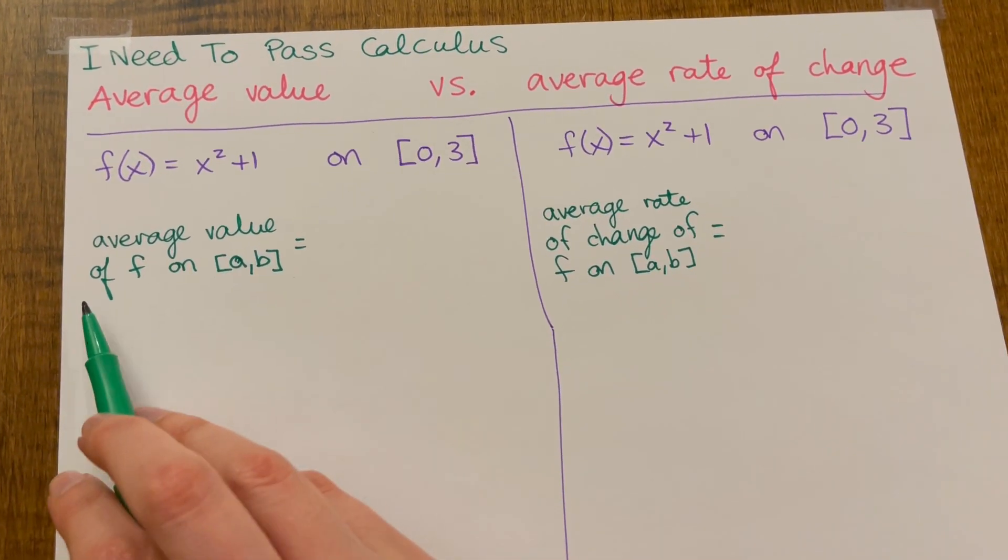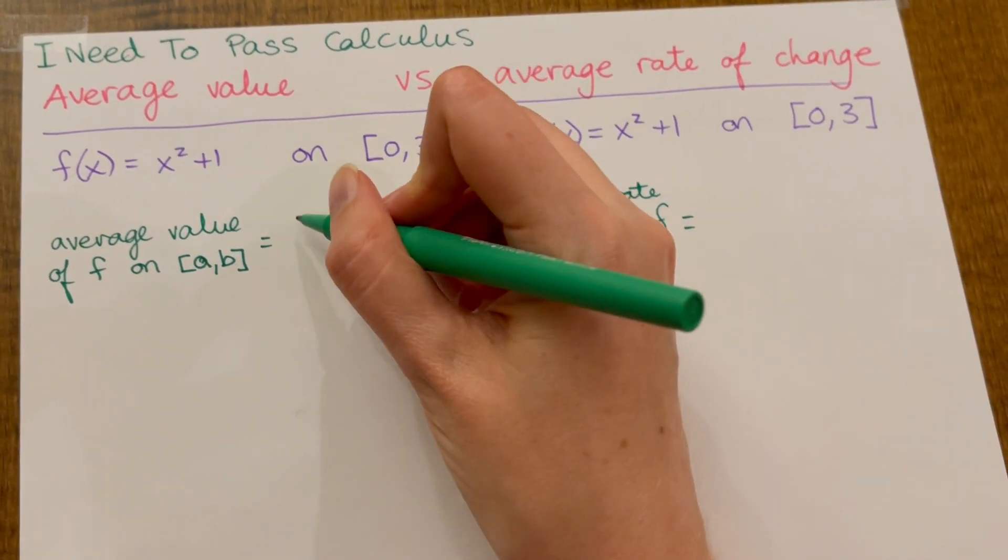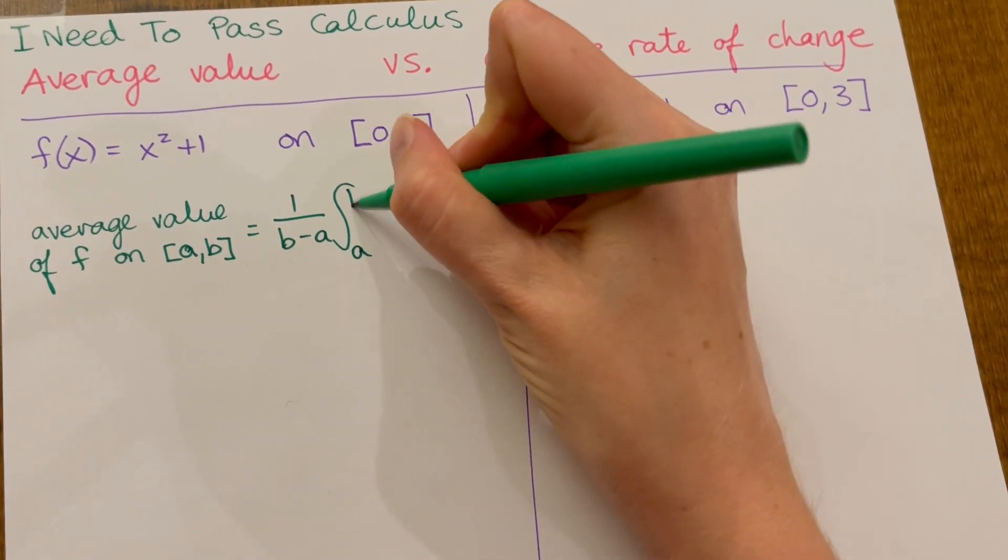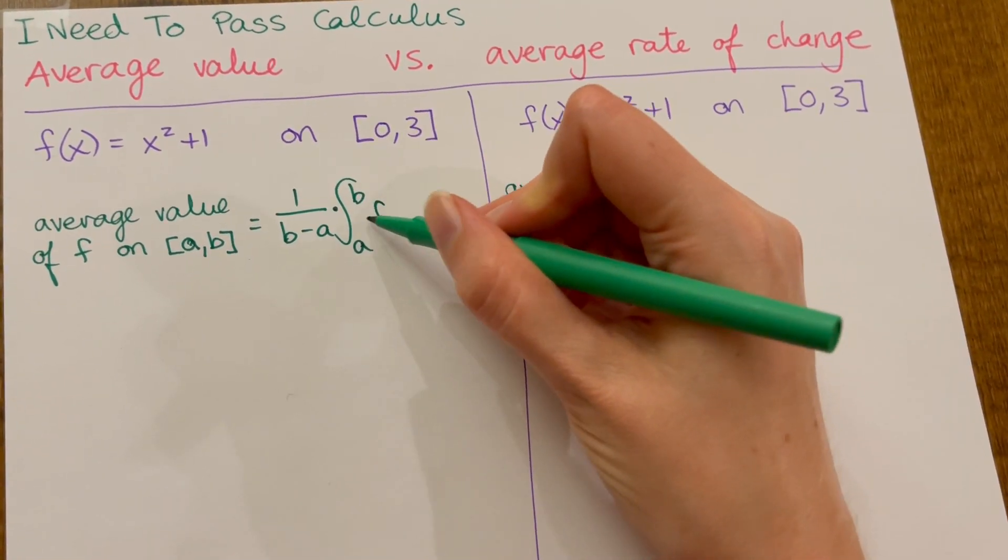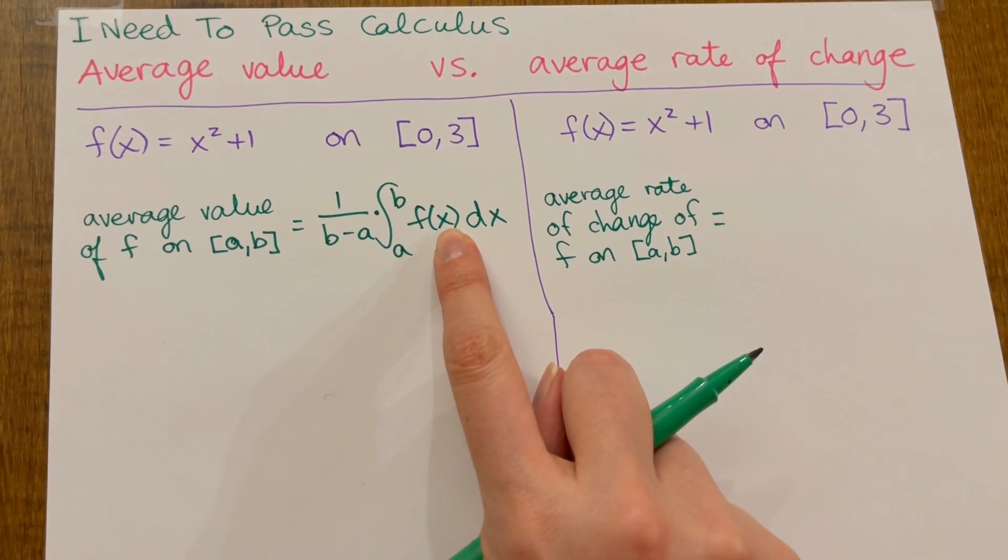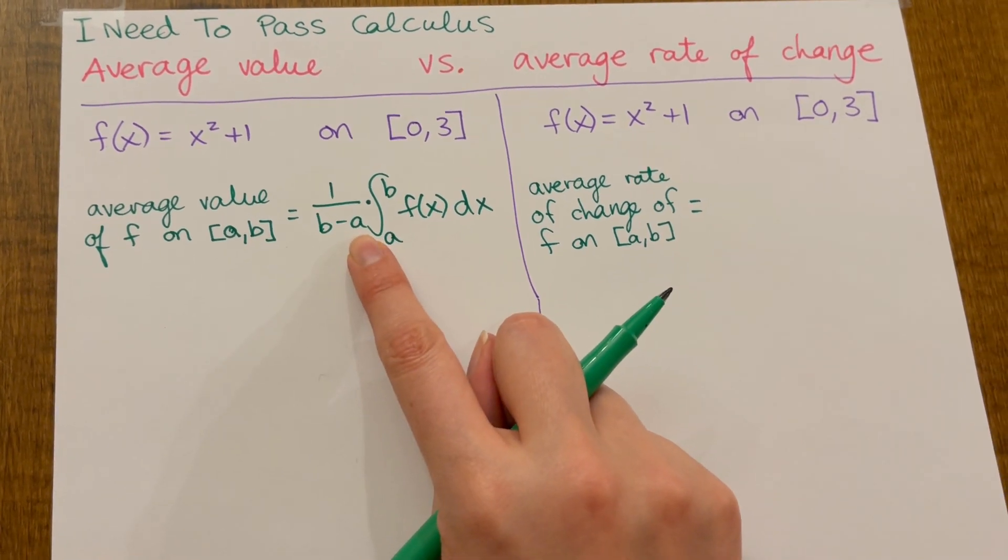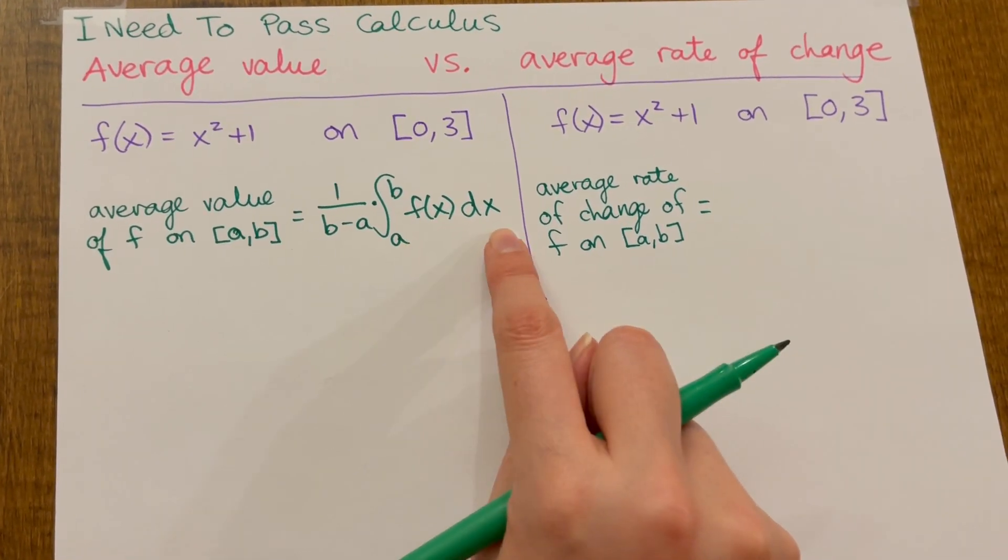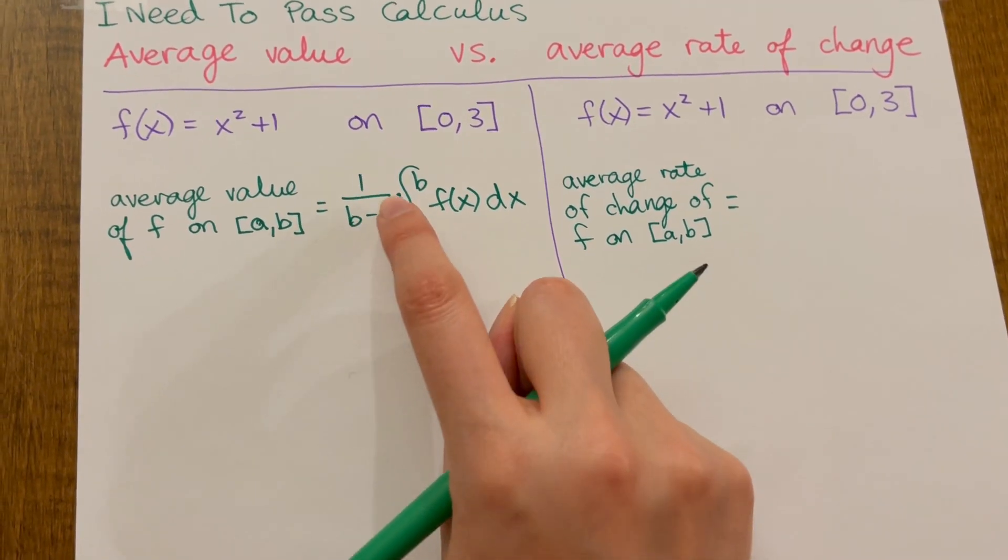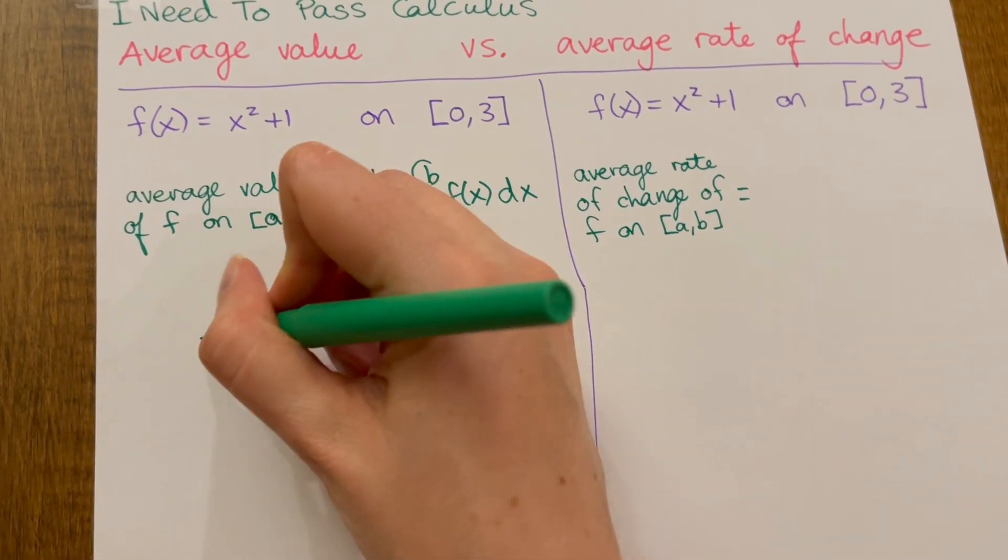The average value of f on a to b is the average height of f. This has a special formula: 1 over b minus a times the definite integral from a to b of f of x dx. You just have to calculate the definite integral which will be a number and multiply that by this number which is 1 over b minus a. That final number will be the average height of this function.